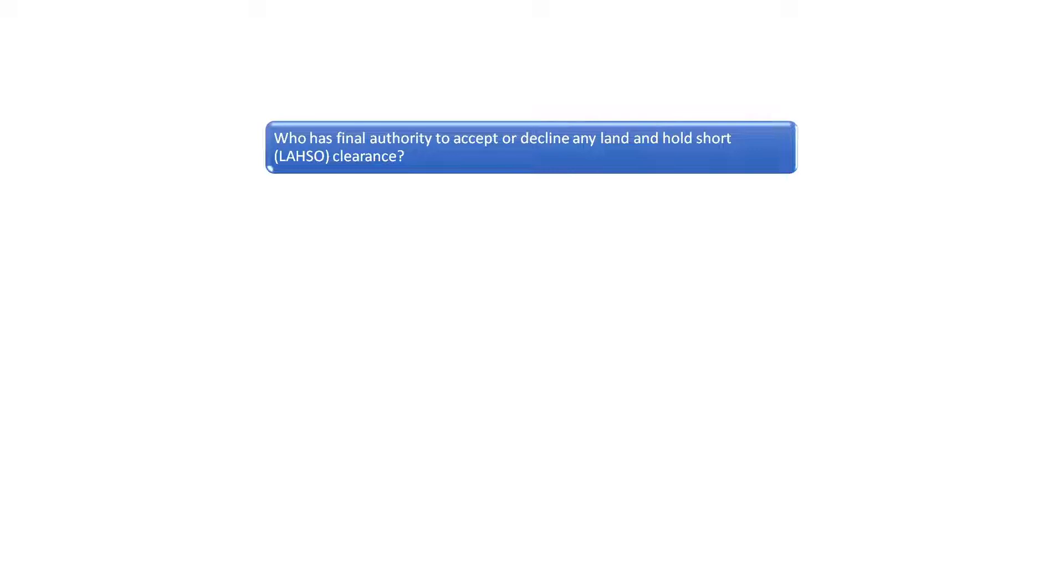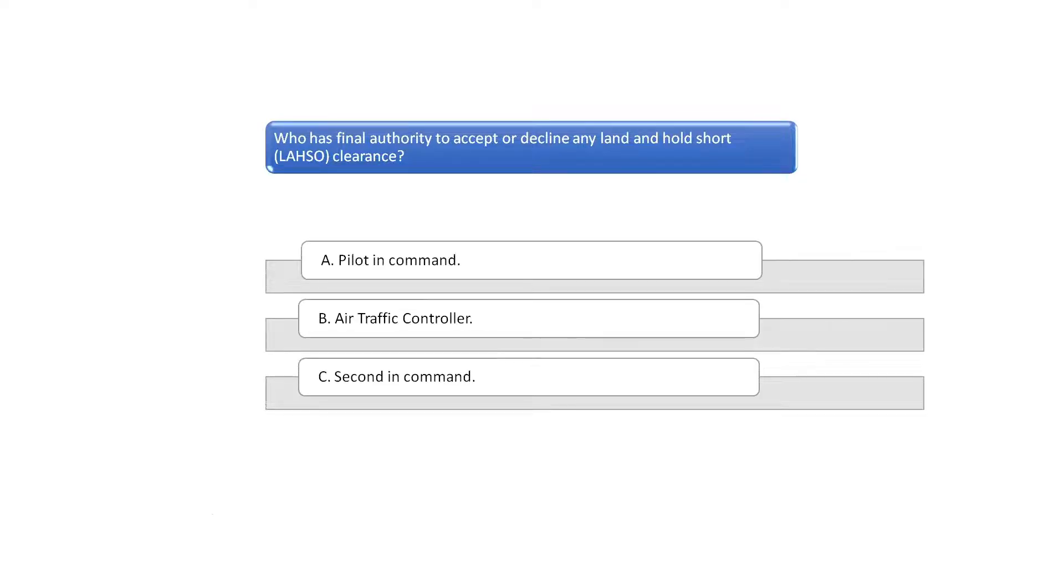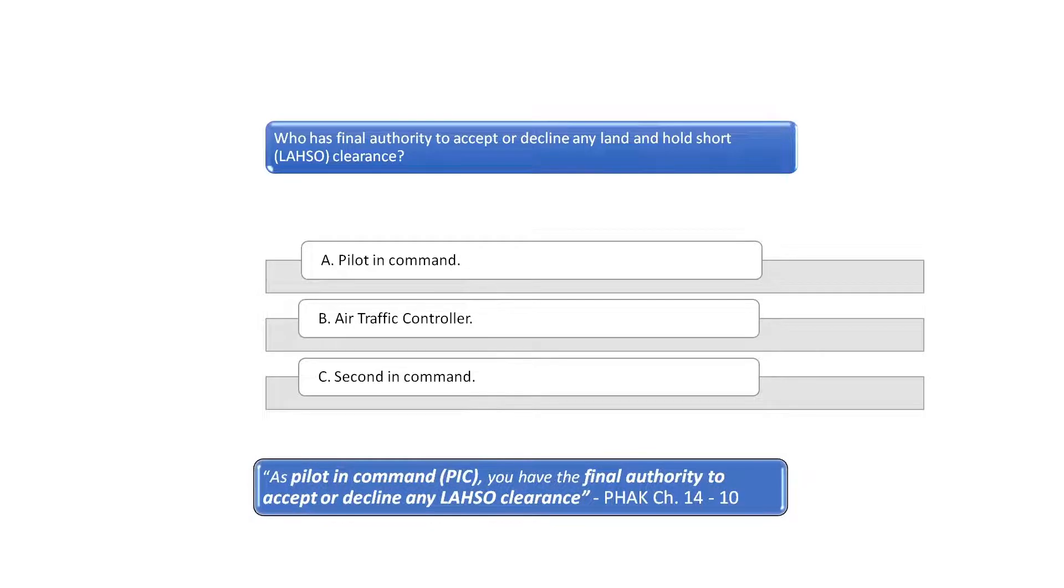Who has final authority to accept or decline any land and hold short clearance? According to Chapter 14 of the Pilot's Handbook of Aeronautical Knowledge, the pilot in command has final authority to accept or decline any land and hold short clearance. The correct answer is A, the pilot in command.